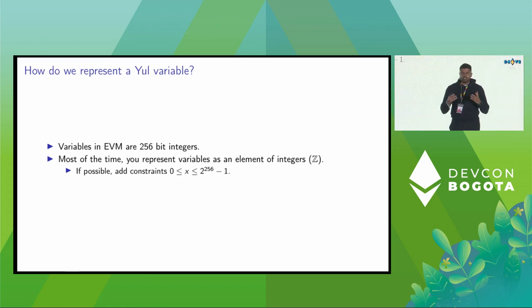The most fundamental thing to encode would be a variable, and a variable in EVM is a 256-bit integer. Most of the time, you represent variables as an element of integers, Z, the notation. If possible, we add the constraint 0 less than or equal to X less than or equal to 2 raised to 256 minus 1.